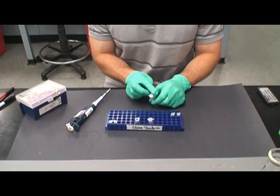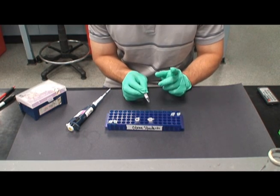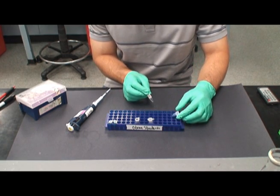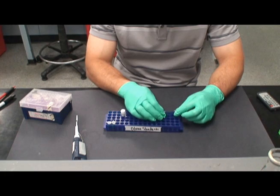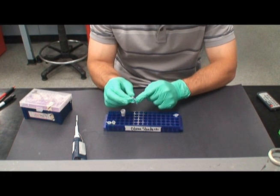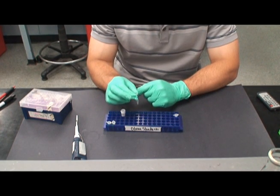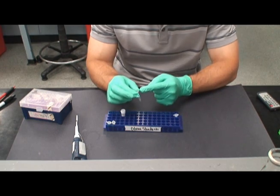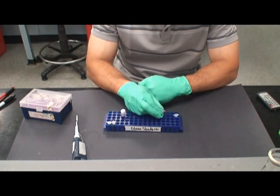2 microliters of Hindi 3 enzyme are added only to the PUC19 Hindi 3 tube. Water is added to the other tube. A brief centrifuge will ensure that all the liquid is at the bottom of the tubes. The tubes are then incubated for 10 minutes at 37 degrees Celsius.